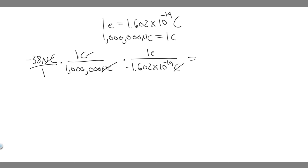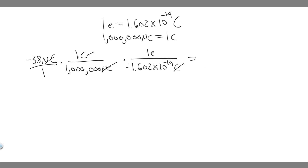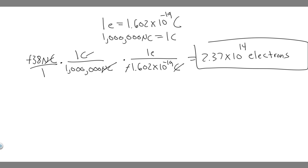So if you go ahead and do this — take minus 38, divide by a million, and then divide by 1.602 times 10 to the minus 19 — these minus signs are going to cancel. So you're just going to have positive 2.37 times 10 to the 14 electrons. So 2.37 times 10 to the 14 electrons is going to be your answer, and hopefully you found this useful.